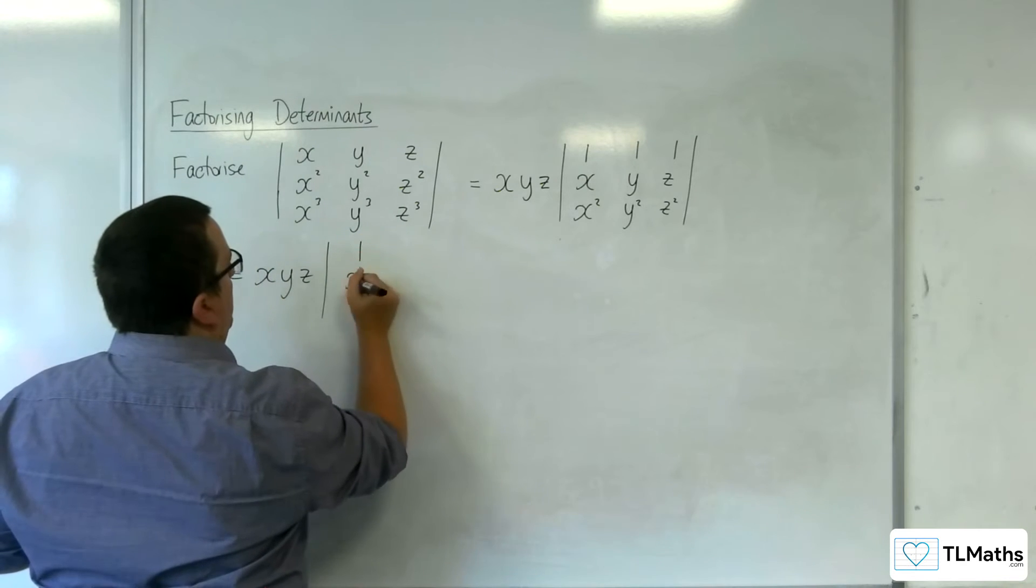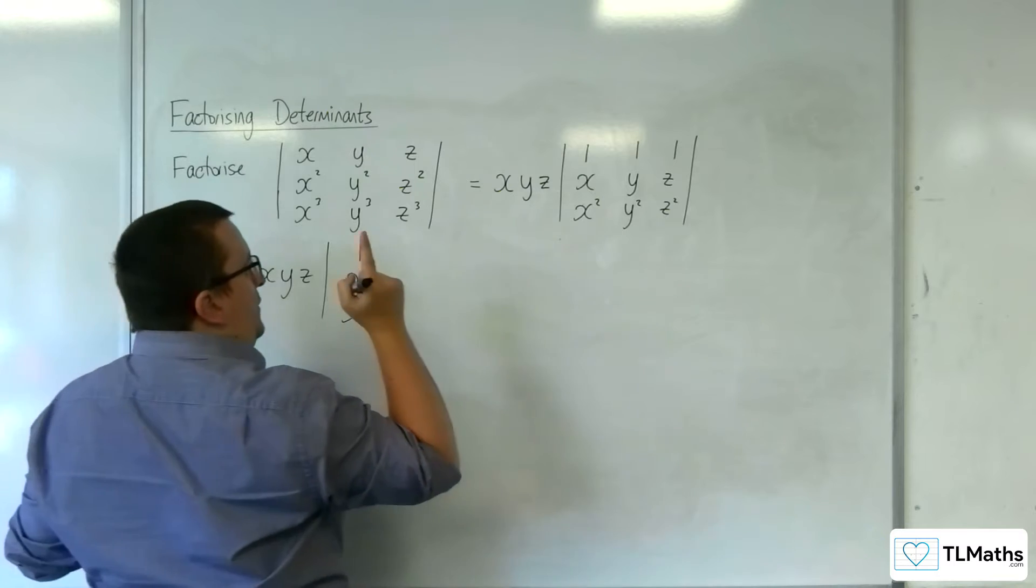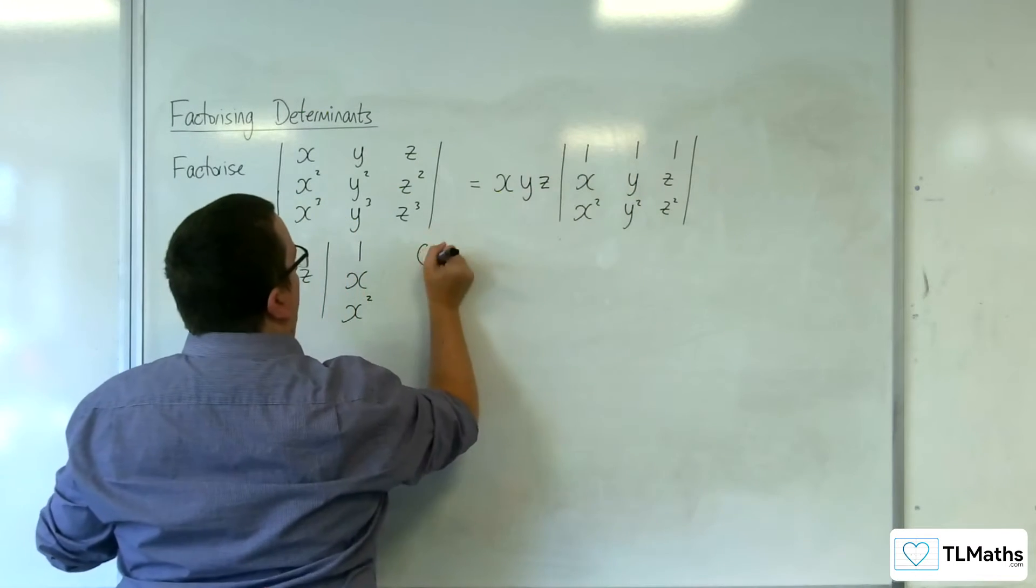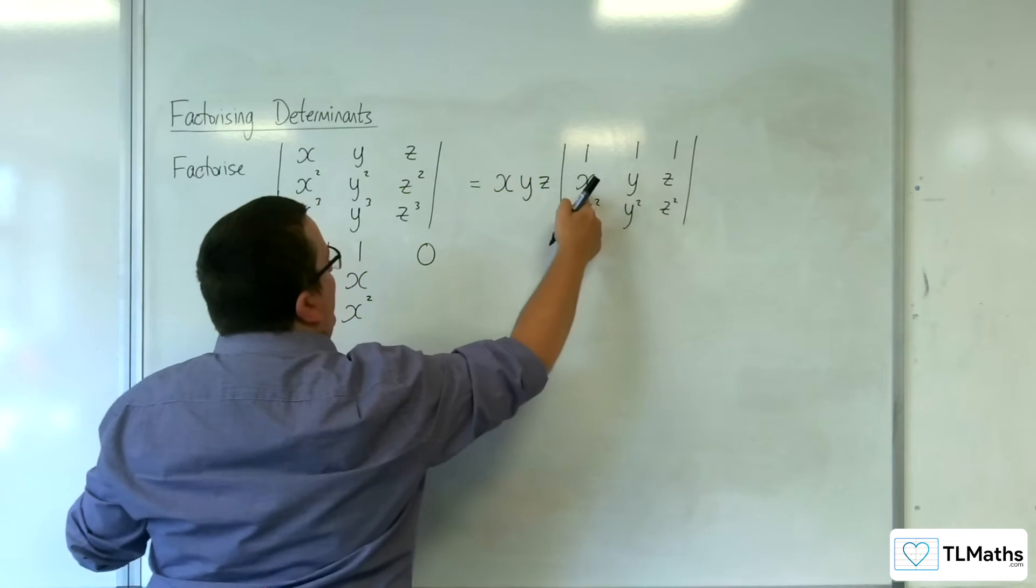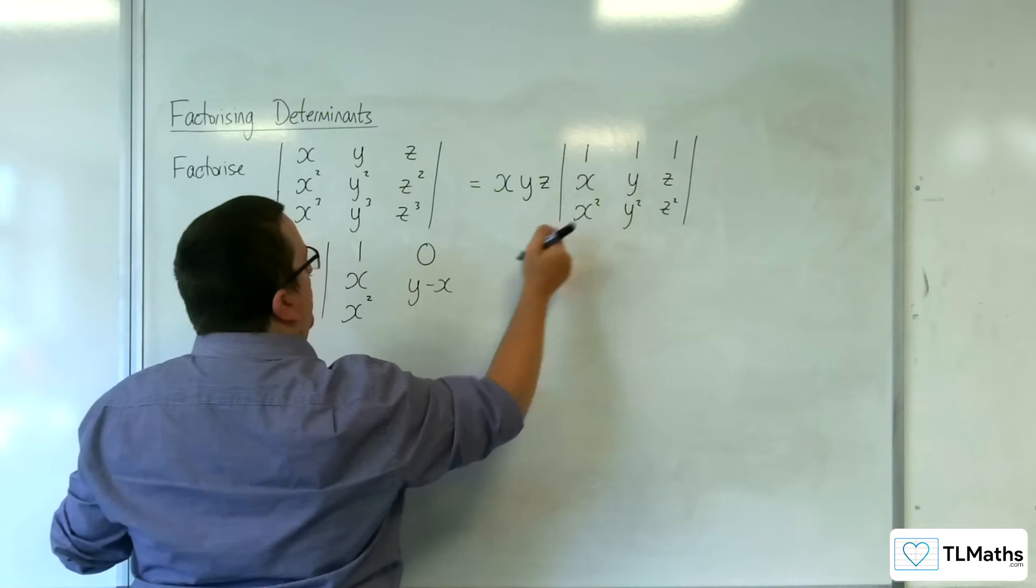I'm going to leave the first column alone. And the middle column now becomes 1 take away 1, y take away x, and y squared take away x squared.